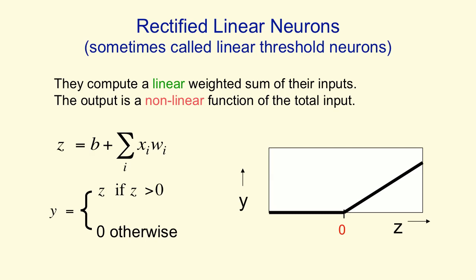So the input-output curve looks like this. It's definitely not linear, but above 0, it is linear. So with a neuron like this, we can get a lot of the nice properties of linear systems when it's above 0. We can also get the ability to make decisions at 0.